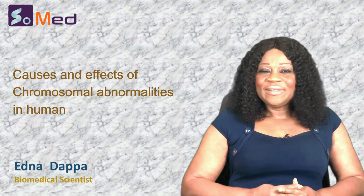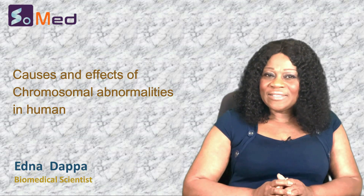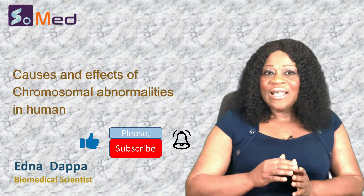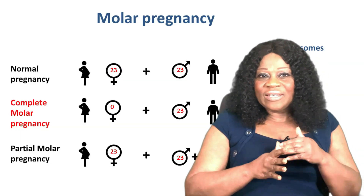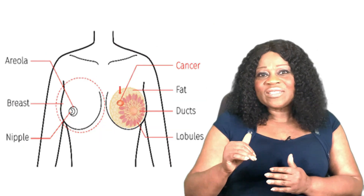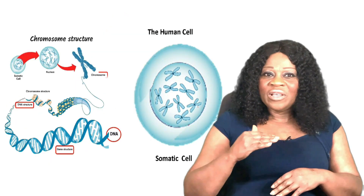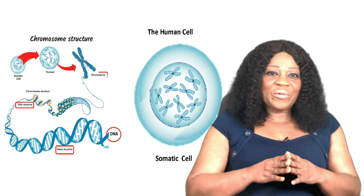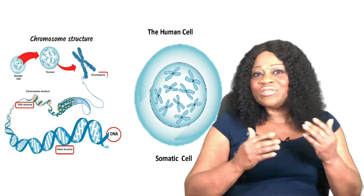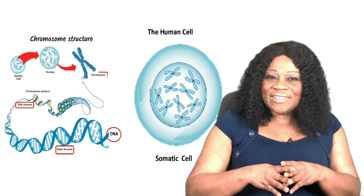Hello everyone and welcome to my channel. My name is Edna Dapper. In my previous videos I mentioned chromosomal abnormalities as the cause of some abnormal vaginal bleeding, referencing cases such as abortions and molar pregnancy. I also spoke about inherited genetic mutations that could lead to breast and ovarian cancers, and paternity tests to determine the father of a child. Today I will be talking about human genetic makeup and causes of chromosomal abnormalities — a series creating awareness of medical conditions caused by natural processes we have no control about.